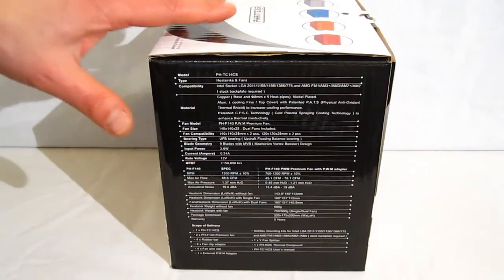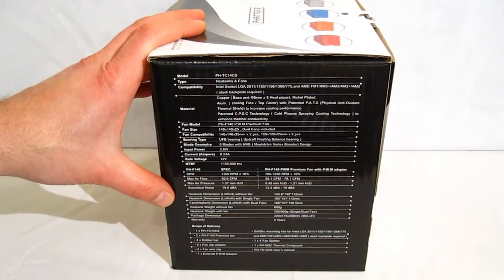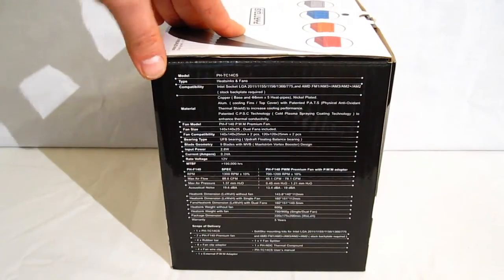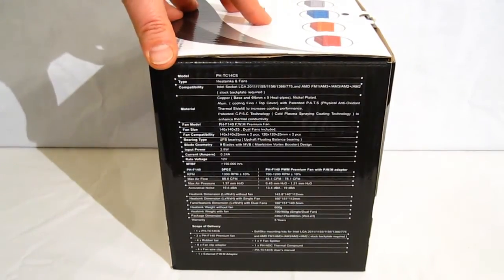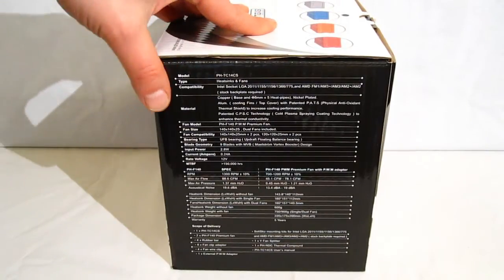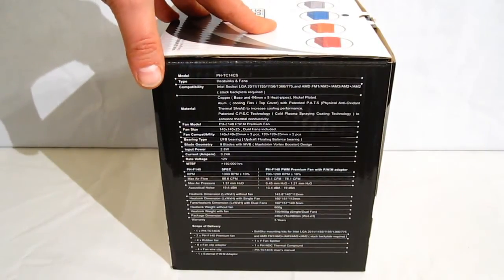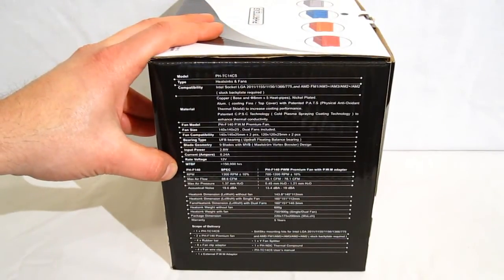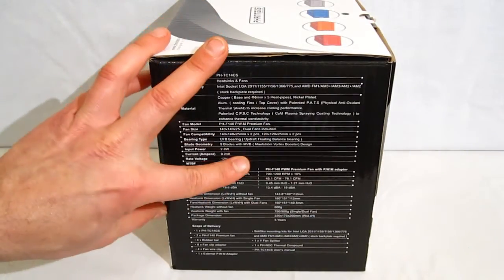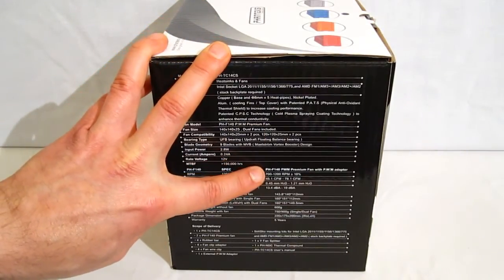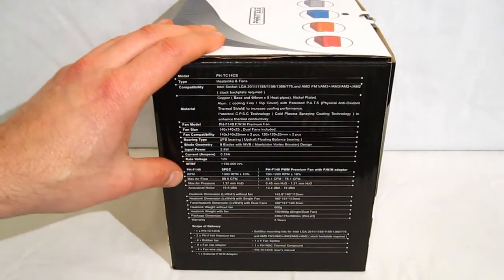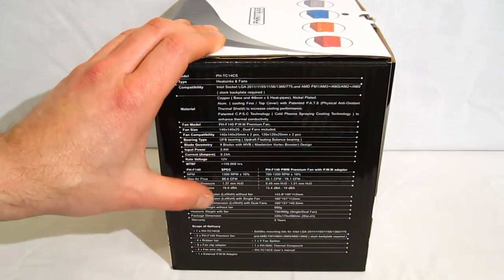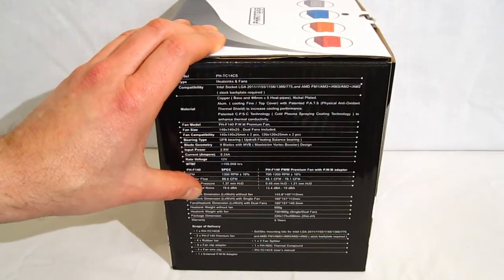On the last side of the box, we find the complete specification list. Big things to look for here, it's only 141mm tall. As we said, this is going to be a lower profile unit. It's going to fit into a lot of places that the previous PHTC-14PE would not. Also, the 140mm fans, 1300 RPM. Using the PWM adapter, 700 to 1200 RPM. That's going to give you a range of 45 to 88 CFM. Also, very quiet, 13.4 to 19.6 dBA.